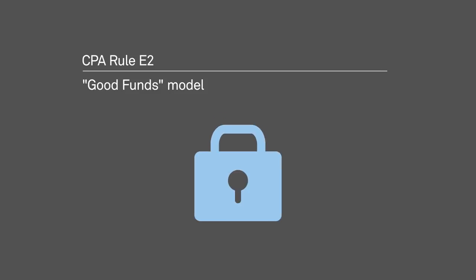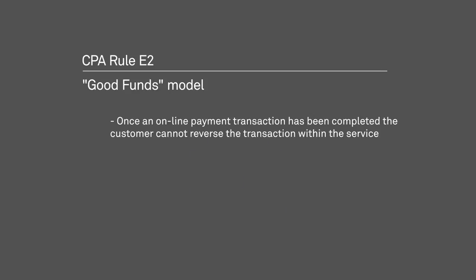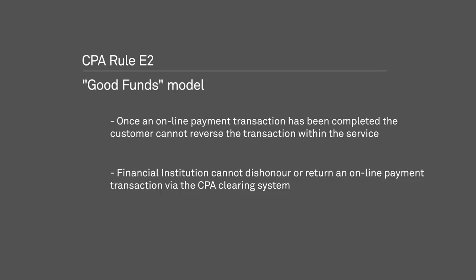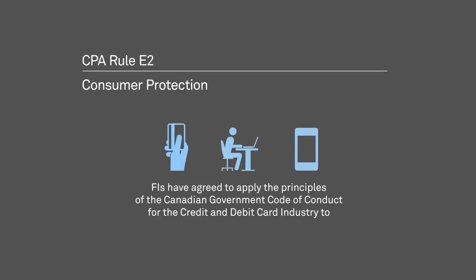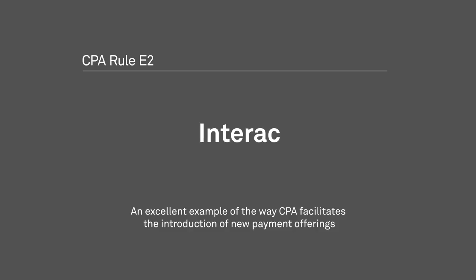Rule E2 sets out key safeguards to protect all parties involved in online payment transactions. It protects merchants by supporting a good funds model, which means that once an online payment transaction is completed, the customer cannot reverse the transaction within the service. Financial institutions can't subsequently dishonor or return an online payment transaction via the CPA's clearing system either. To protect consumers, FIs have agreed to apply the principles of the Canadian government's Code of Conduct for the Credit and Debit Card Industry to online payments. Rule E2 enables Interac's online payment service and is an excellent example of the way CPA works with the payments industry and stakeholders to facilitate the introduction of new payment offerings.